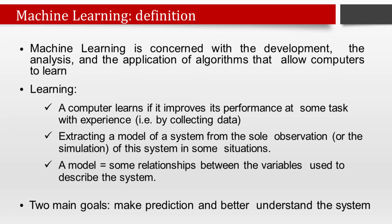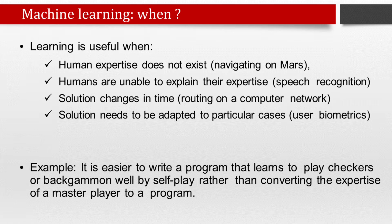Machine learning enables a machine to automatically learn from data, improve performance from experiences, and predict things without being explicitly programmed. With the help of sample historical data, known as training data, machine learning algorithms build a mathematical model that helps in making predictions or decisions without being explicitly programmed. It brings computer science and statistics together for creating predictive models. The more information we provide, the higher the performance. A machine has the ability to learn if it can improve its performance by gaining more data.